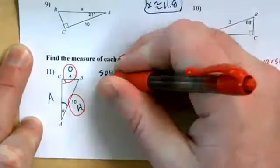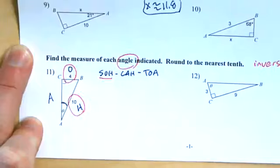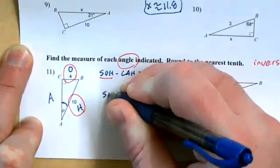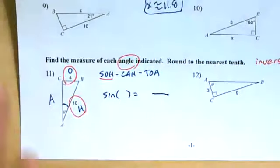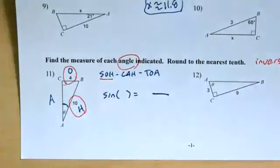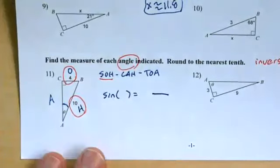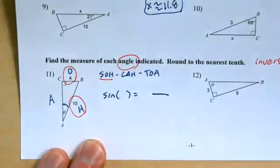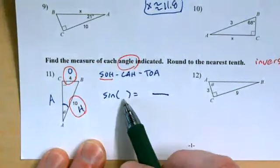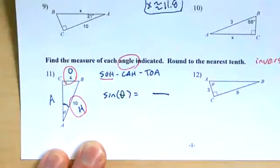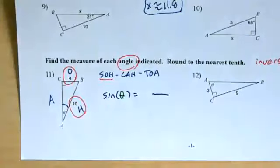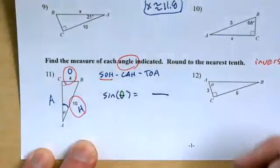Opposite and hypotenuse, that's sine. So we're writing another sine equation for this one. And I'm anticipating using an inverse, so I'm just giving a little space before my fraction bar. Parentheses. There's always the angle. This time my angle is theta. That's just a Greek letter. It's just a variable. If you're super opposed to it, feel free to use X. And then sine is opposite over hypotenuse, so 4 over 10.